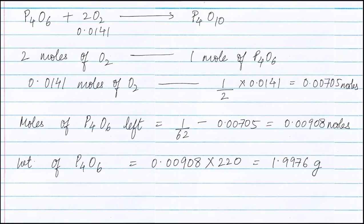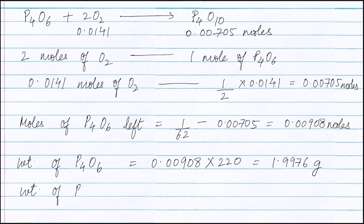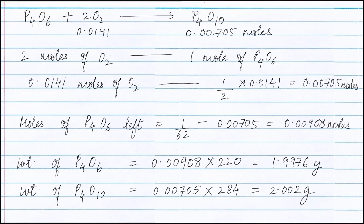As seen from the balanced equation, 1 mole of P4O6 reacts with oxygen to form 1 mole of P4O10. Therefore, 0.00705 moles of P4O6 will react with oxygen to form 0.00705 moles of P4O10. Therefore, weight of P4O10 is equal to 0.00705 moles multiplied by molecular weight of P4O10, that is 284 grams, and this is equal to 2.002 grams.